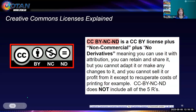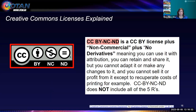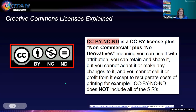The last license, which is the most restrictive, is CC BY-NC-ND. This is the license that Ted Ed holds. It's a CC BY license plus Non-Commercial plus No Derivatives. This means you can use it with attribution, retain it, and share it, but you cannot adapt it or make any changes, and you cannot sell it or profit from it except to recuperate printing costs. CC BY-NC-ND does not include all the five R's because of the no-derivatives restriction.